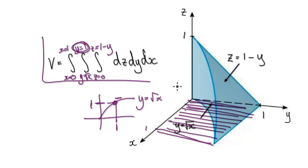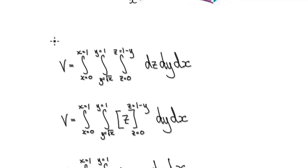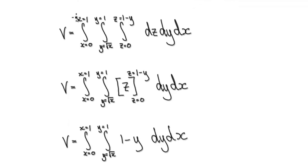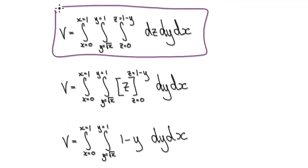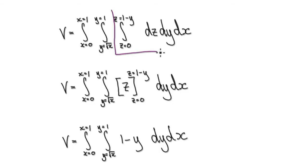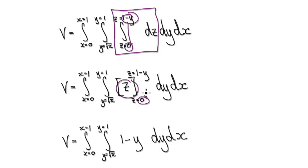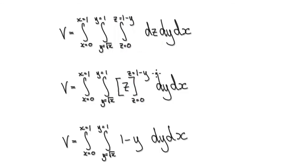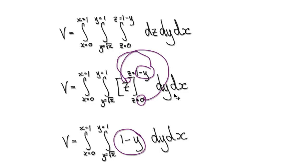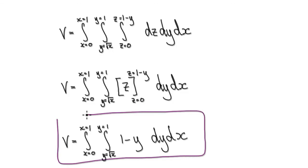So now it's just a matter of integrating. Looking at z, integrate with respect to z: that gives z evaluated from 0 to 1 minus y, which equals 1 minus y.